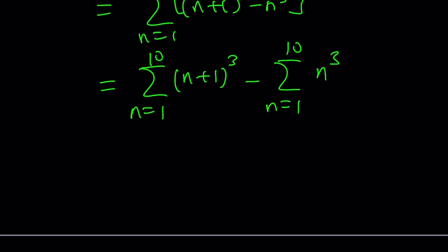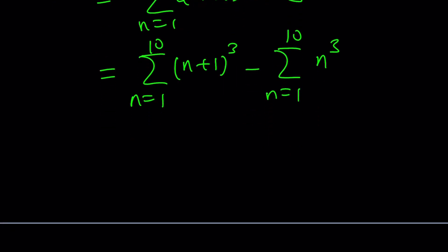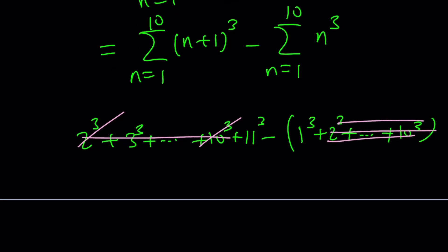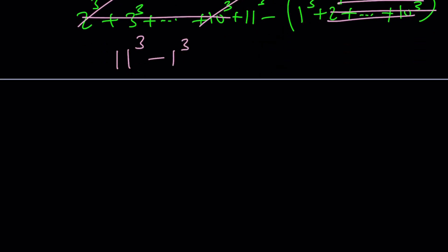And now, this is going to be fairly easy to do because if you expand it a couple terms, if n equals 1 in the first one, you're going to get 2 cubed and then 3 cubed, all the way up to 10 cubed and then 11 cubed minus 1 cubed, 2 cubed, all the way up to 10 cubed. When you subtract these two guys, a lot of terms are going to cancel out. 2 cubed through 10 cubed is going to be gone, and you're going to end up with 11 cubed minus 1 cubed, which is 1331 minus 1 and that's going to be 1330 as our answer as before.